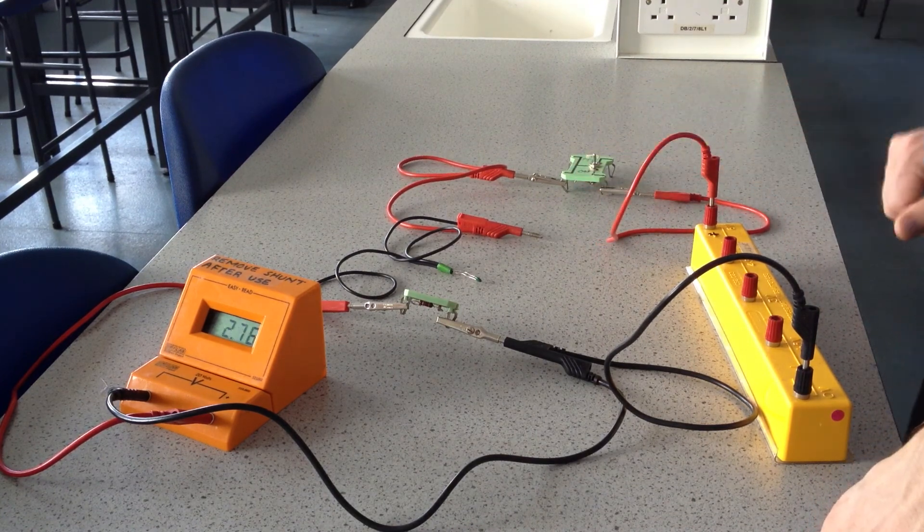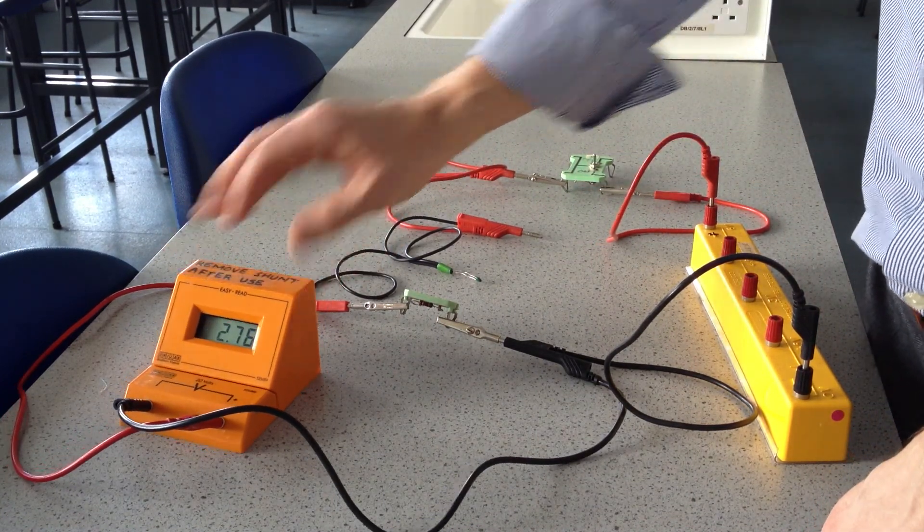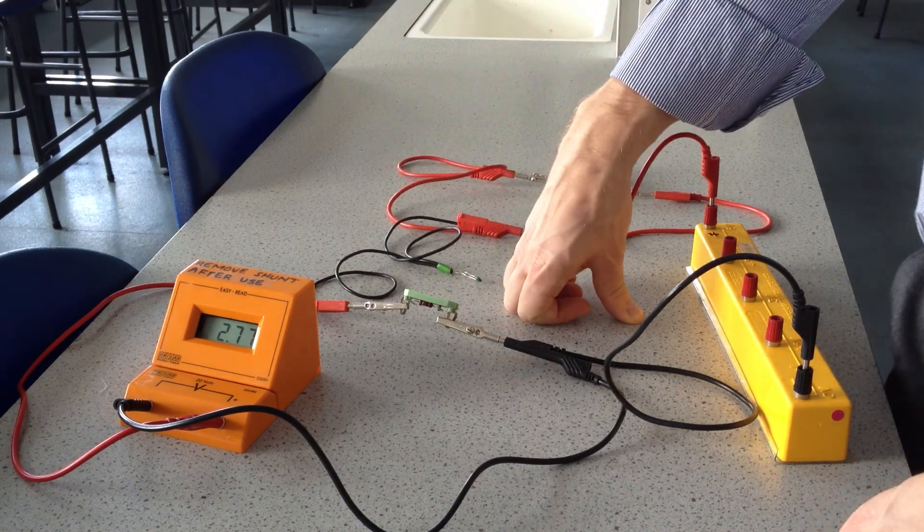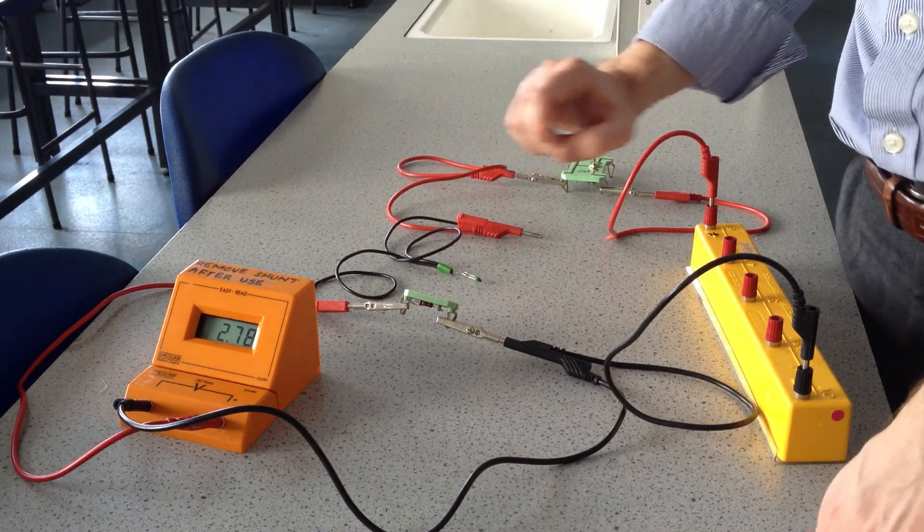I am going to turn it on now and the voltage across the fixed resistor is about 2.77 volts with some minor fluctuations.